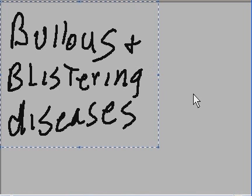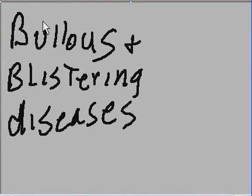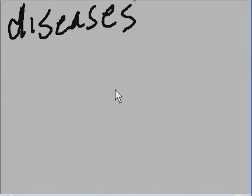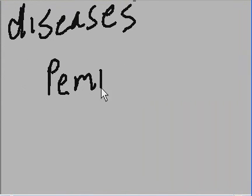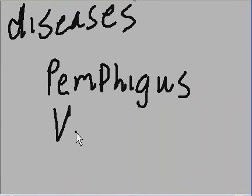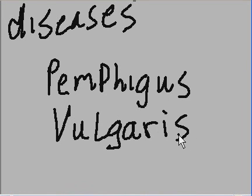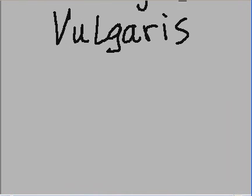Let's talk about bullous and blistering diseases. The first one we want to talk about is called Pemphigus vulgaris. Pemphigus vulgaris will generate bullae — that's the plural; the singular is bulla. A bulla is an intact blister.